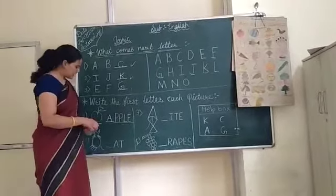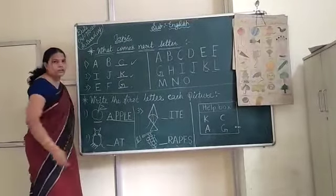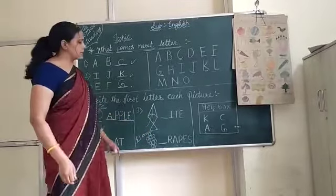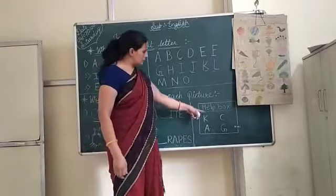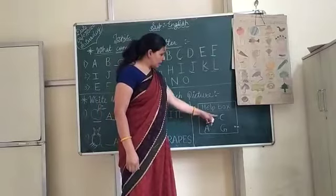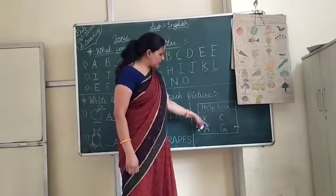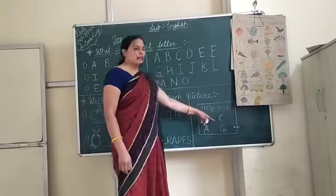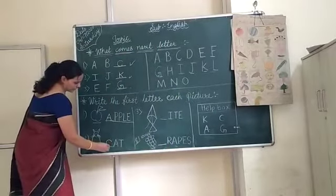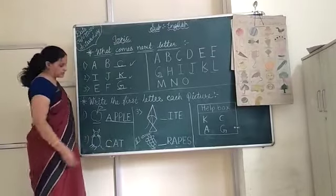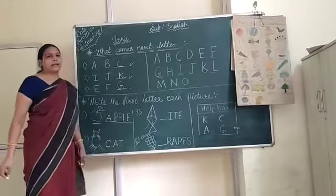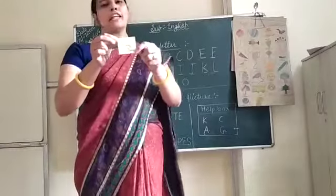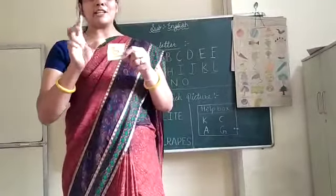The next picture is C for cat, but C letter is missing here. So that is C letter — again I have a help box. Where is C? This is A, and this is C letter. So we place C letter here, and then we speak C, A, T — cat. This is a picture of a cat. Cat says meow meow.